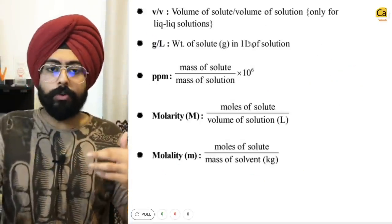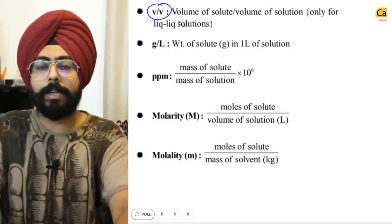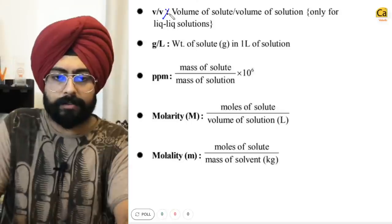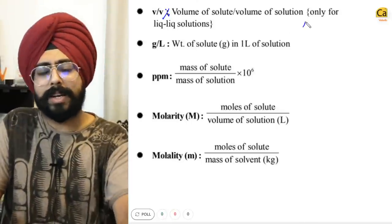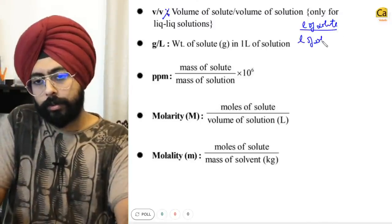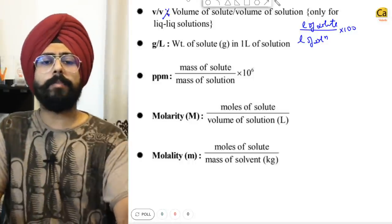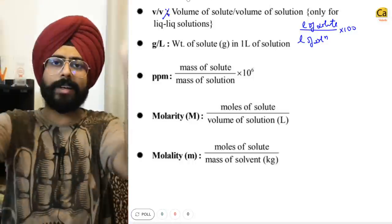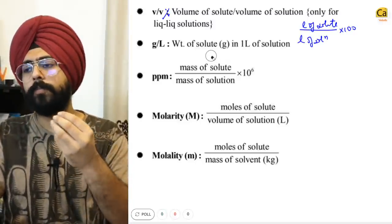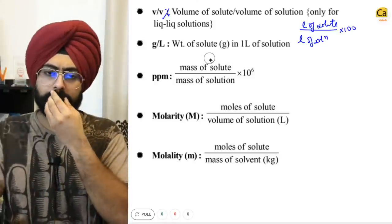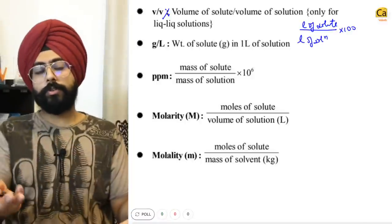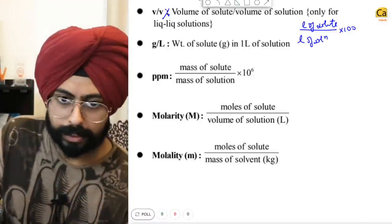Then we have volume by volume percentage, written as V/V%. This is: liters of solute ÷ liters of solution × 100. It's essentially the percentage of a solute in the total volume. You see this in cough syrups sometimes. When you have a liquid-liquid solution, you refer to it in volume by volume percentage.